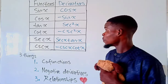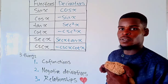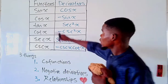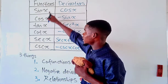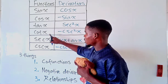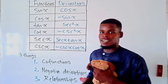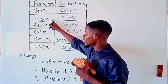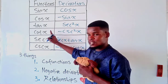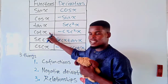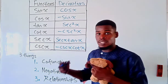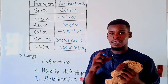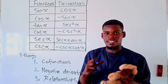Let me call out these functions for you. We have: sine x, cosine x, tangent x, cotangent x, secant x, and cosecant x. Notice the pattern — after sine comes cosine, after tangent comes cotangent, after secant comes cosecant. Each function is paired with a version that has 'co' in it.